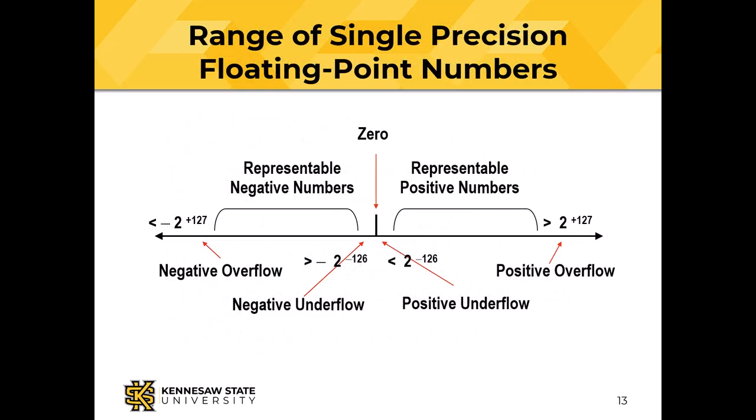Let's look at the range of single precision — 32-bit floating point numbers. Numbers greater than 2 to the plus 127 can't be represented in 32 bits, because 127 is the largest exponent available. The circumstance that we have a number too large to represent is called positive overflow. Numbers too small to represent are those less than 2 to the minus 126 — minus 126 is the smallest exponent available. This is called positive underflow. The number 0 can be represented exactly. Underflow and overflow can occur on the negative side too. A negative number too close to 0 is called negative underflow, and one too far from 0 is called negative overflow.